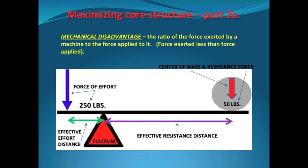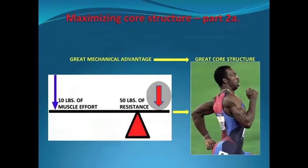Here's what mechanical disadvantage looks like. In order to just hold this lever even, you would need to produce much more force than the amount you would be holding up. No one wants to use a tool that puts them in a position of mechanical disadvantage. Here's Michael Johnson — a perfect example of an athlete with great core structure that has mechanical advantage.